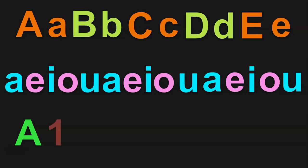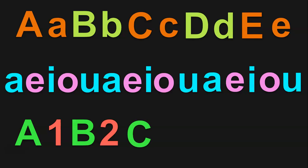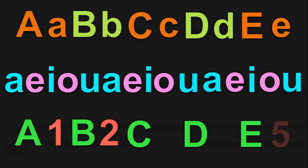Next we have A followed by 1, B followed by 2, C followed by a gap and D followed by a gap, and the pattern ends with E followed by 5. What could be the numbers in the gaps? Let us understand the pattern: A is followed by 1, B is followed by 2, and at the end we have E followed by 5. What could be the number following C? Yes, it will be 3, and the number following D will be 4. Doesn't this sound interesting and make the children think?